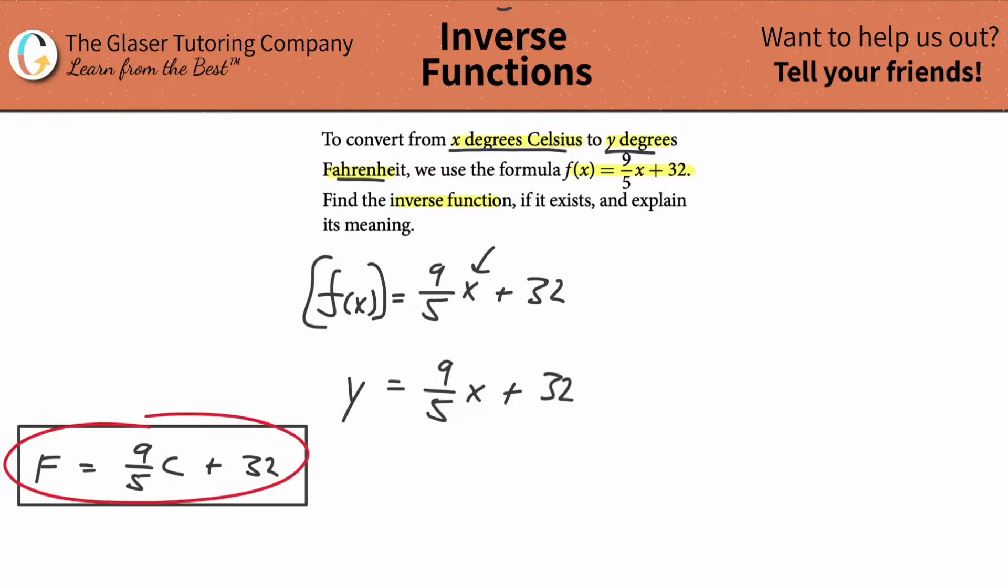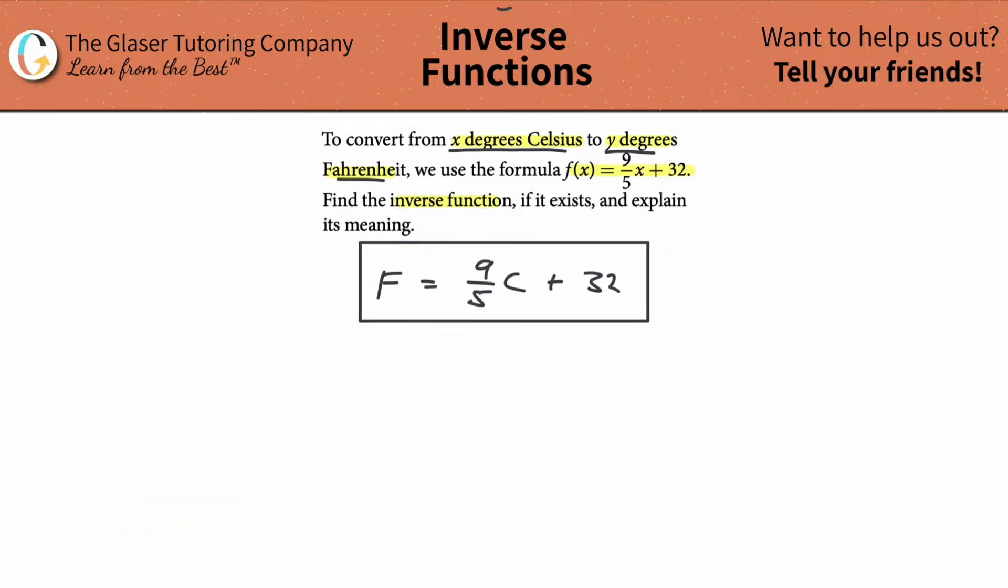So let's find the inverse of this. What does that mean? It means just take the F and switch it with the C. Take the variables and switch them. So now let's clean this up. This becomes the C, and this becomes now the F. So this is the inverse function.